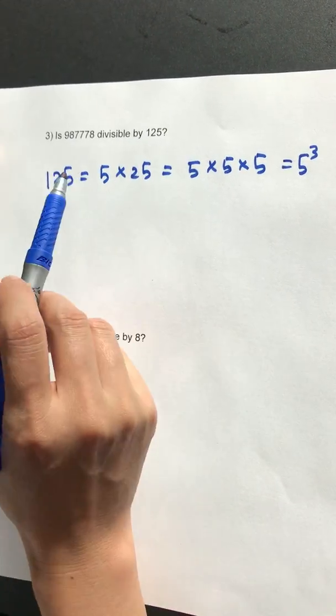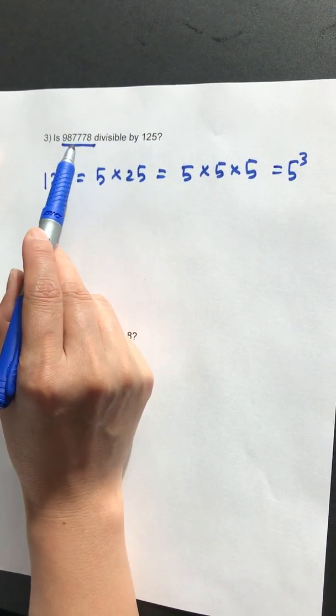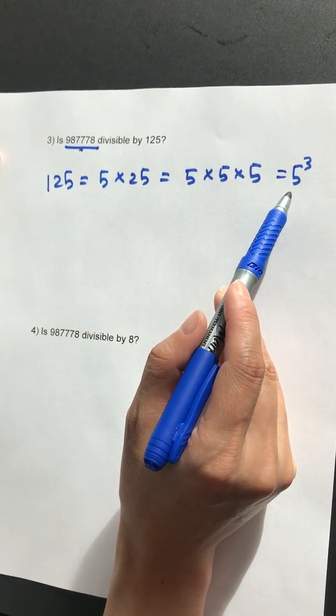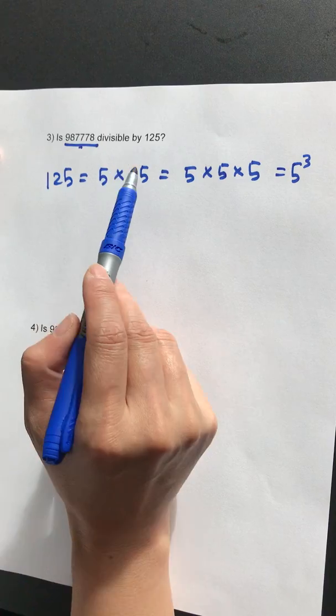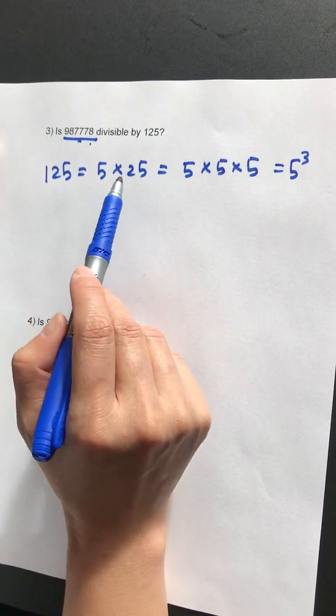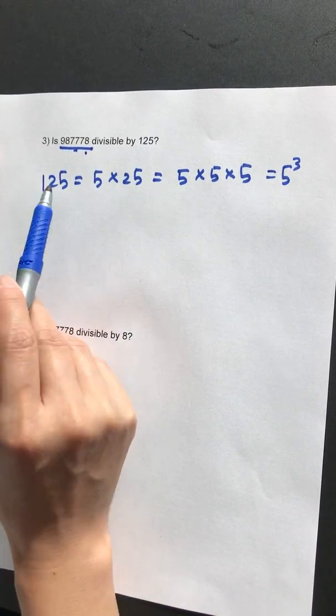For this number to be divisible by 125, it should be divisible by 5. The characteristic for divisibility by 5 is that the ones digit has to be 0 or 5. We can see that the ones digit is 8, so this number cannot be divided by 125.